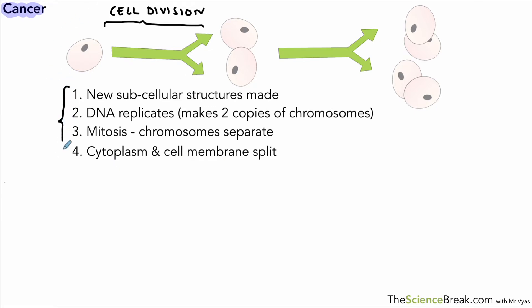This is how cell division happens, and this is a very controlled process. The body is very good at controlling this process to make the cells it needs when it needs them.